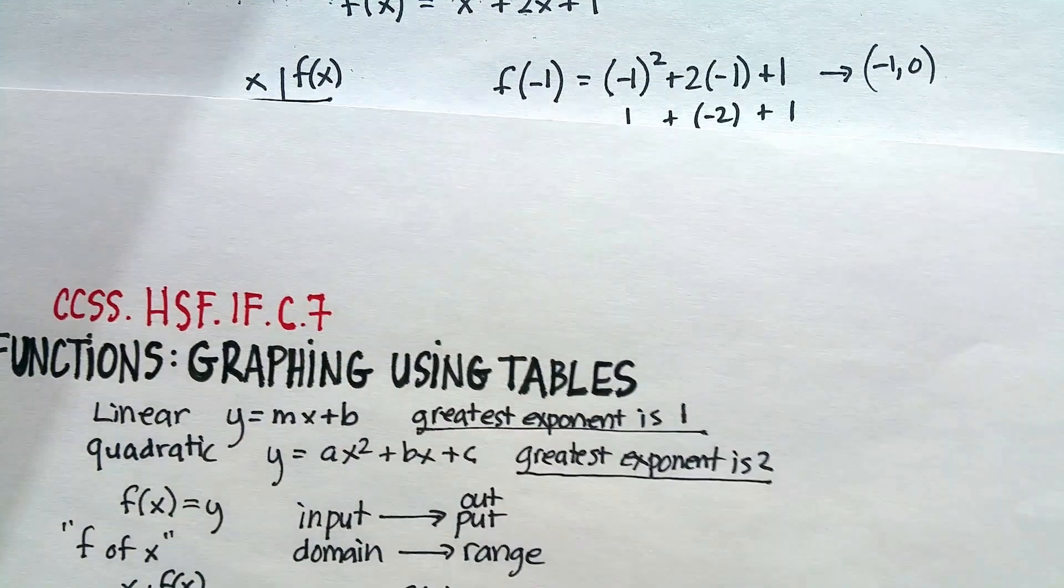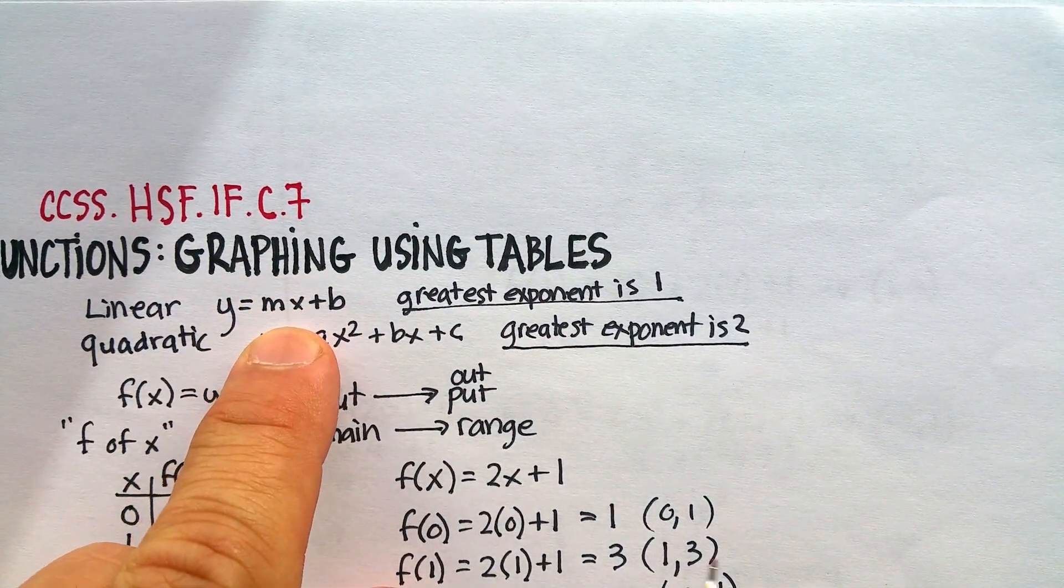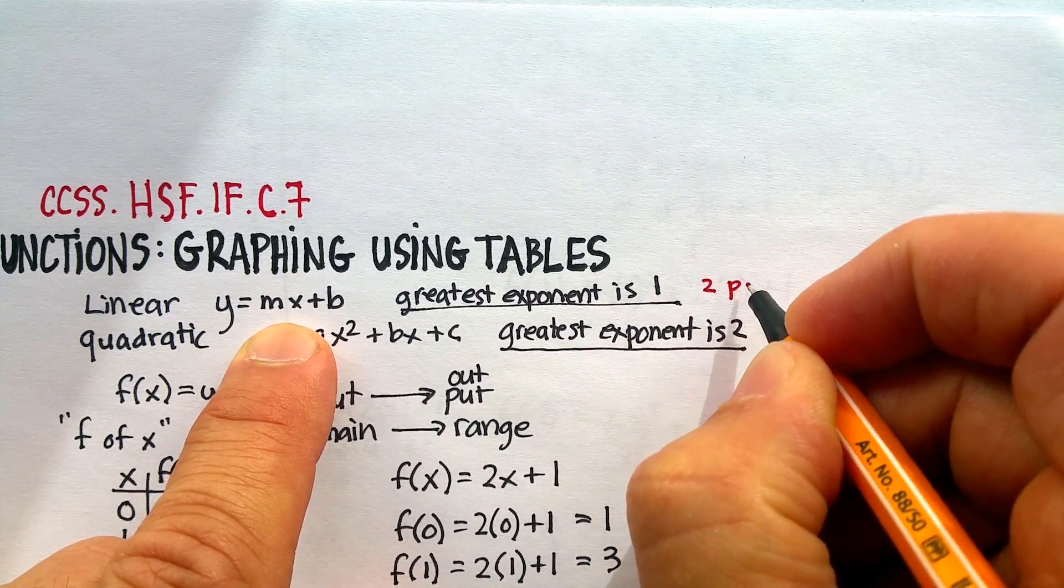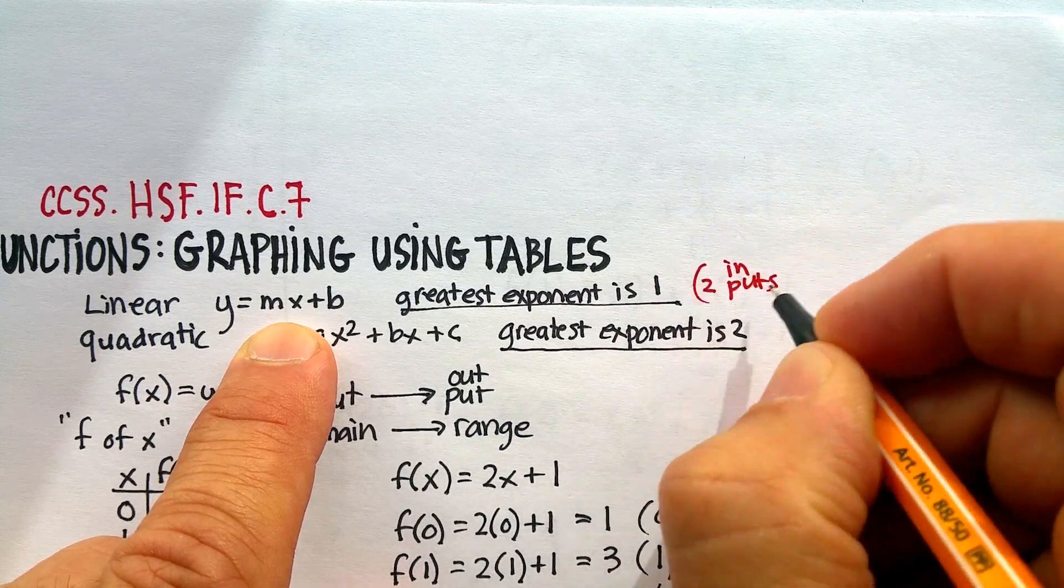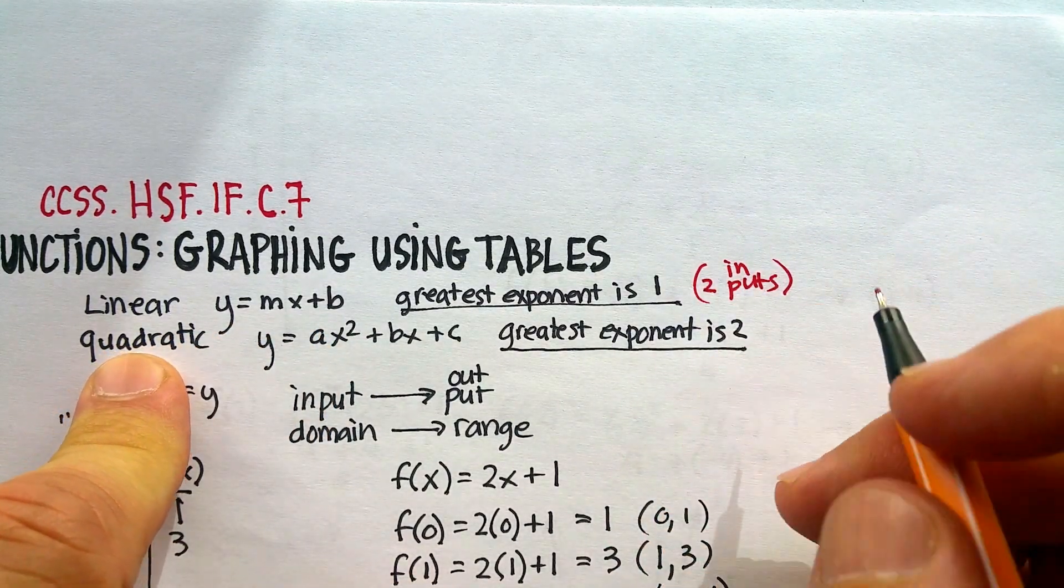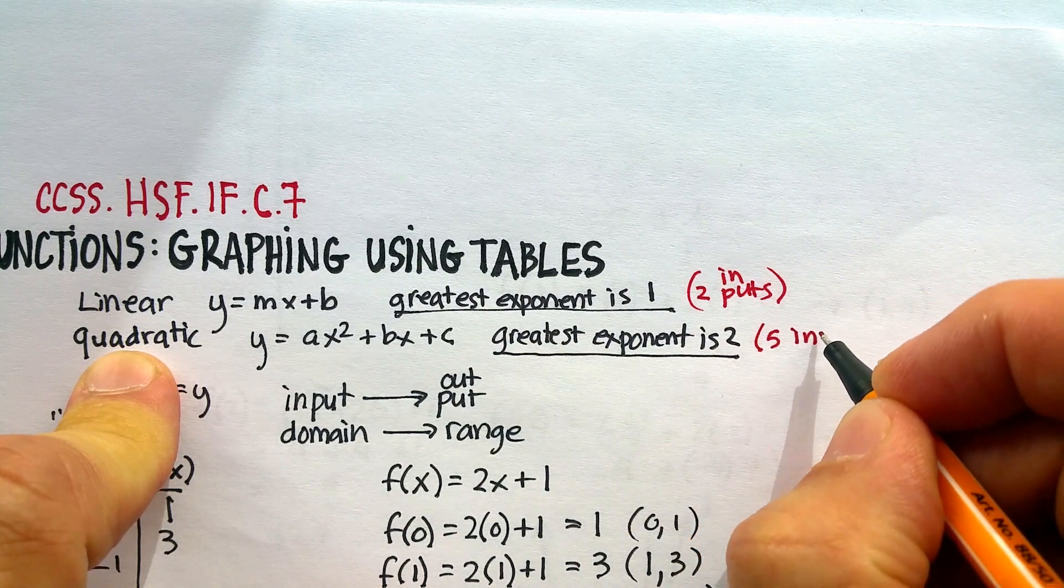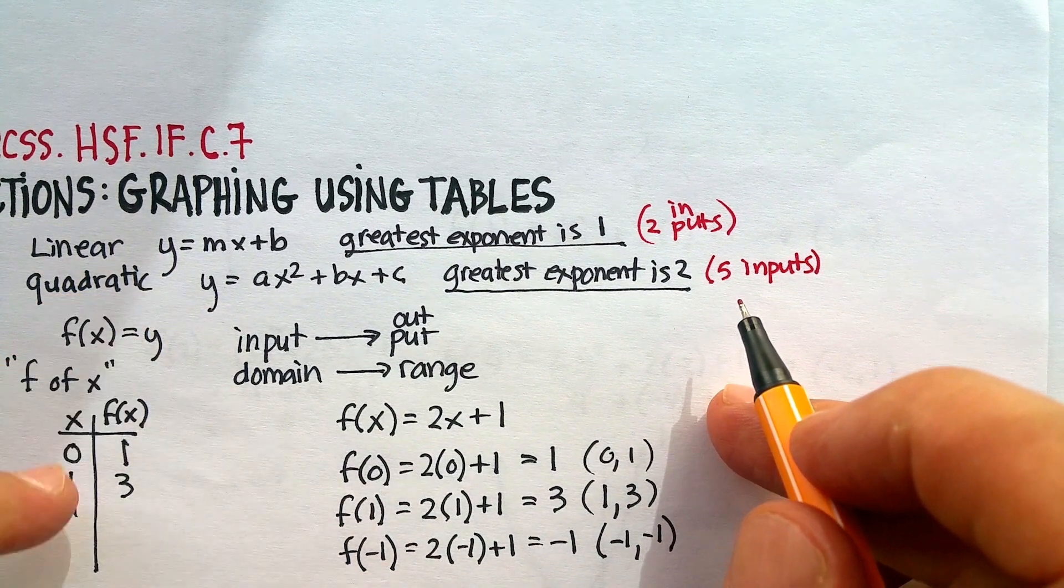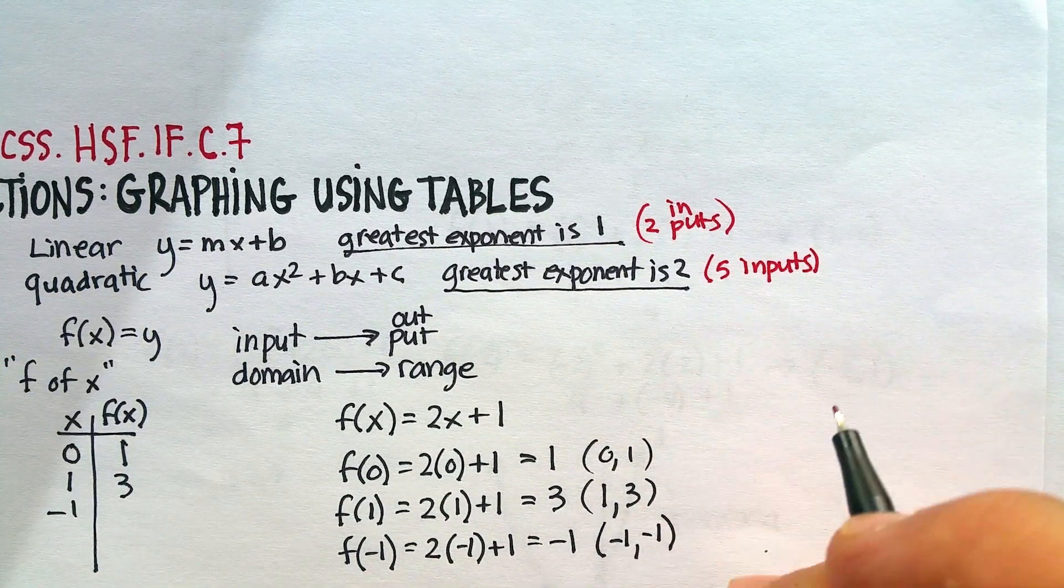Last little bit of advice. Whenever you do linear equations, whenever you see the greatest exponent is 1, do at least 2 points, 2 inputs. Whenever you see a quadratic, do at least 5 inputs. And my advice would be to do 2 negative, do 0, and then 2 positive. And that should help you.